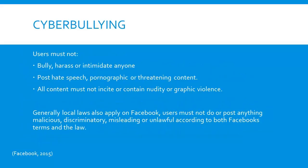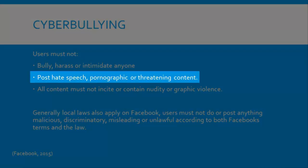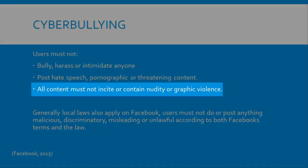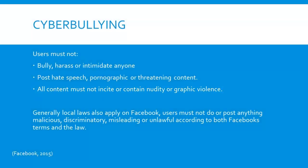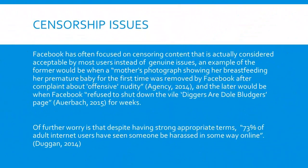In terms of cyberbullying, Facebook also has very strict terms. Users must not bully, harass or intimidate any user, or post content that is hate speech, pornographic or threatening. Content must not incite violence and must not contain nudity or graphic violence. Users must not use Facebook to do anything unlawful, misleading, malicious or discriminatory. These are definitely the key features of Facebook's terms of use, especially with the ever-growing cyberbullying epidemic. While it is disconcerting that Facebook has often focused on censoring the wrong kind of content — especially given that in Facebook's principles it is stated that people should have the freedom to share whatever they want in any medium and any format — it is also alarming that even with terms like this, 73% of adult internet users have seen someone be harassed online.